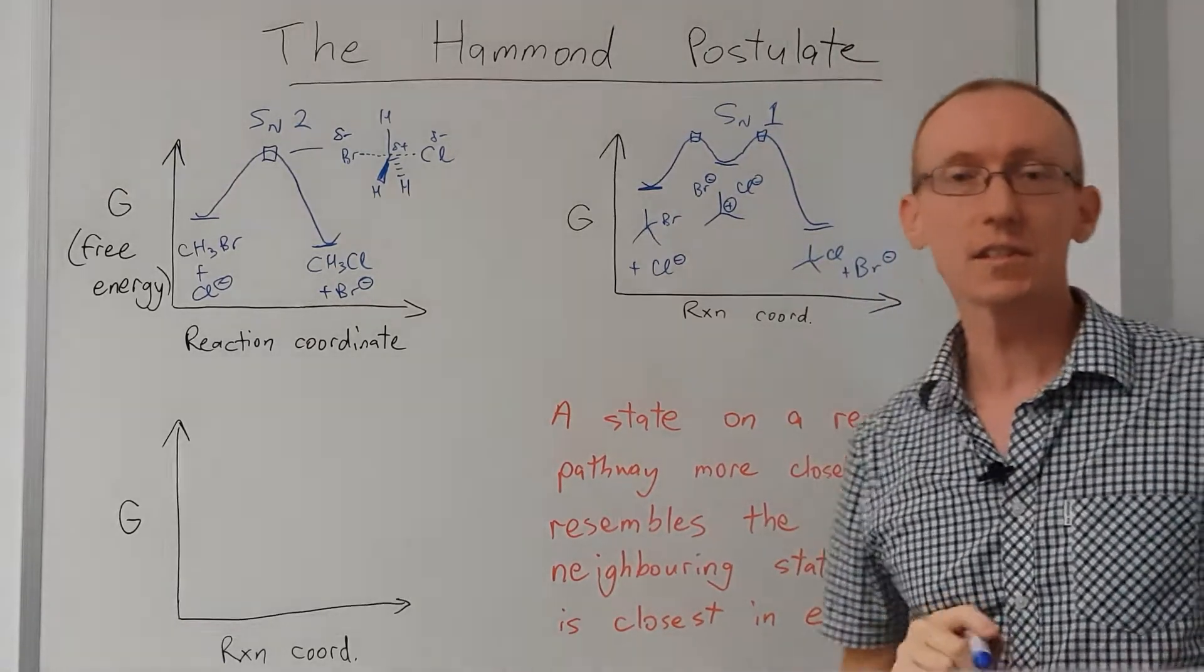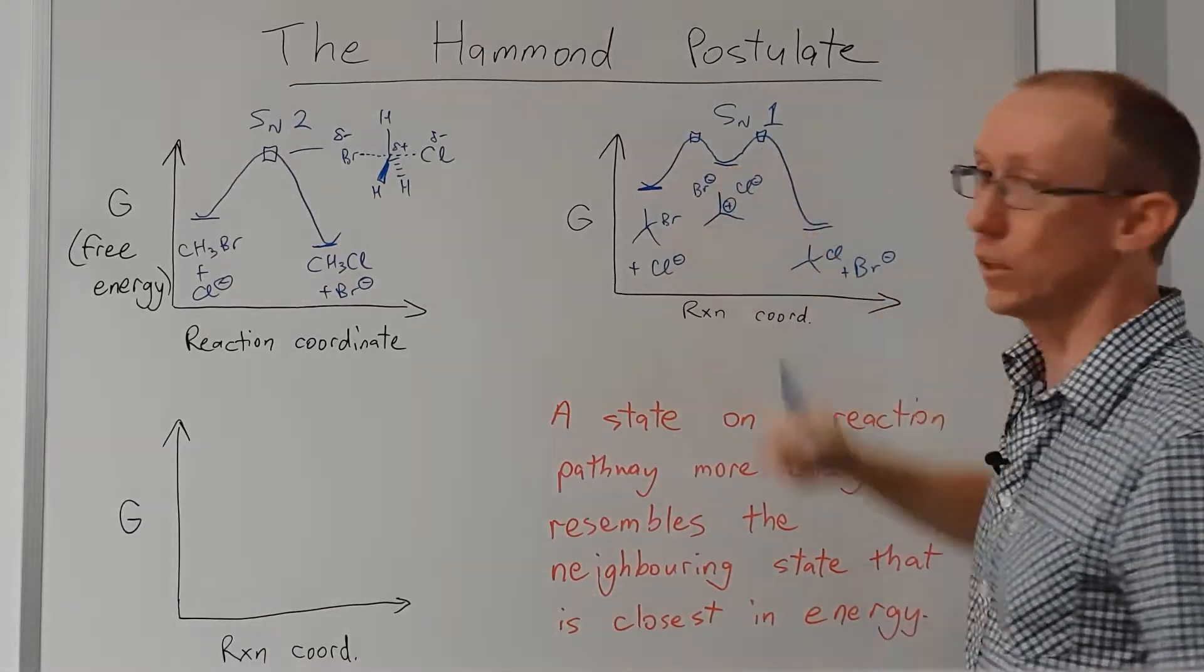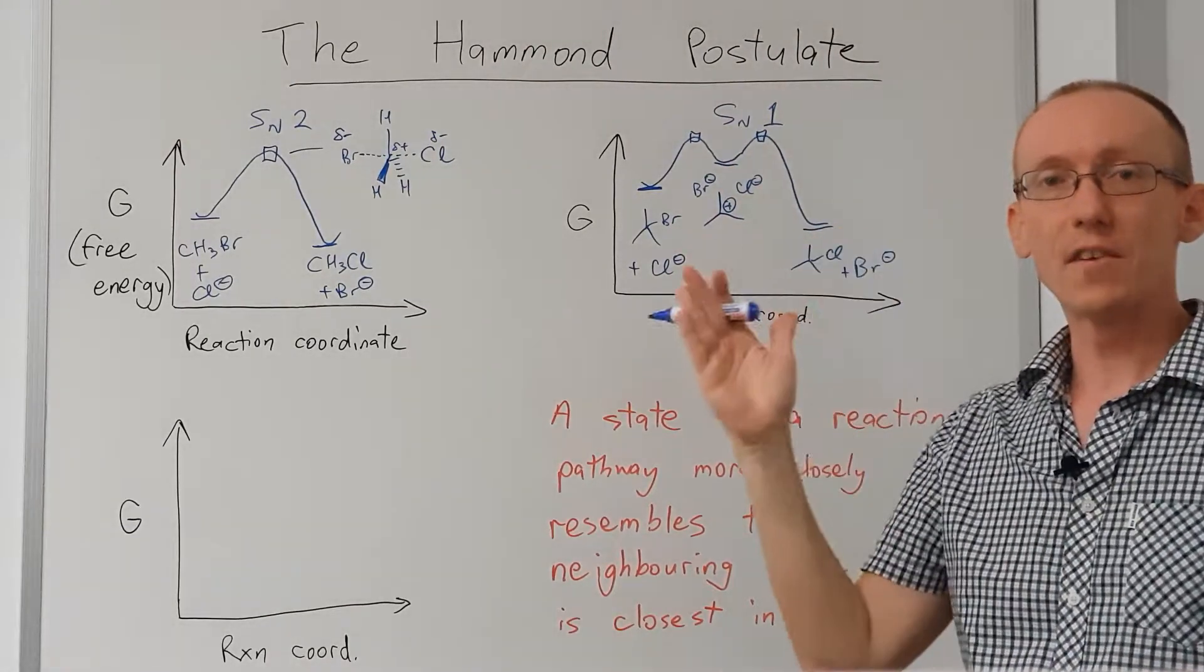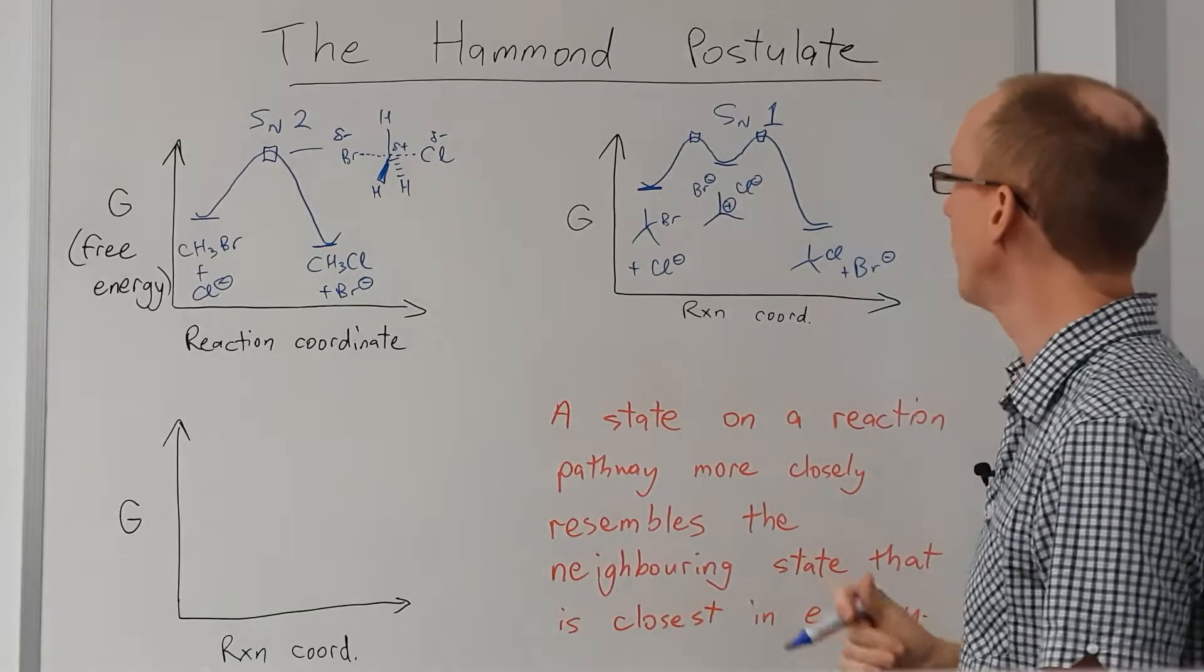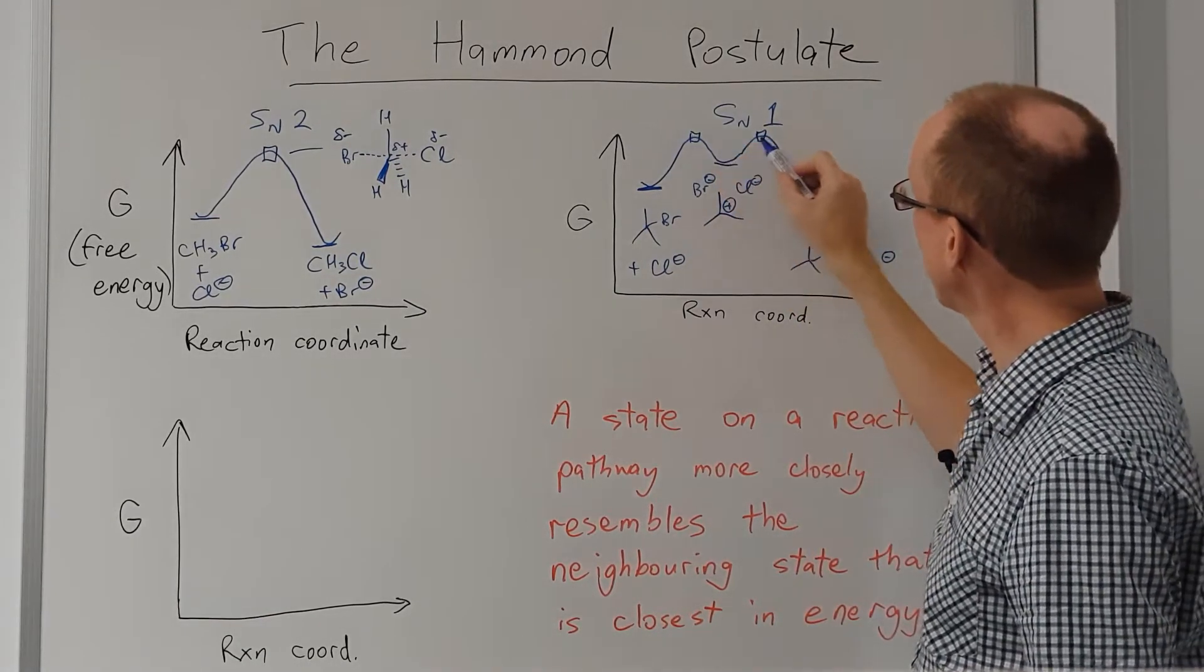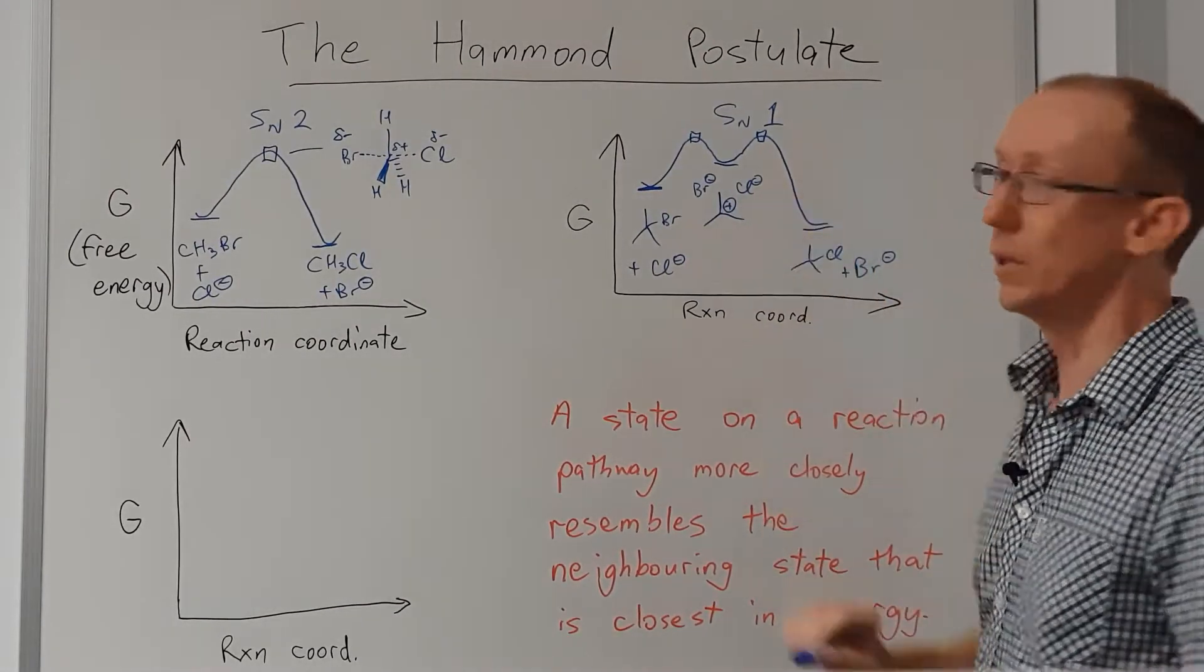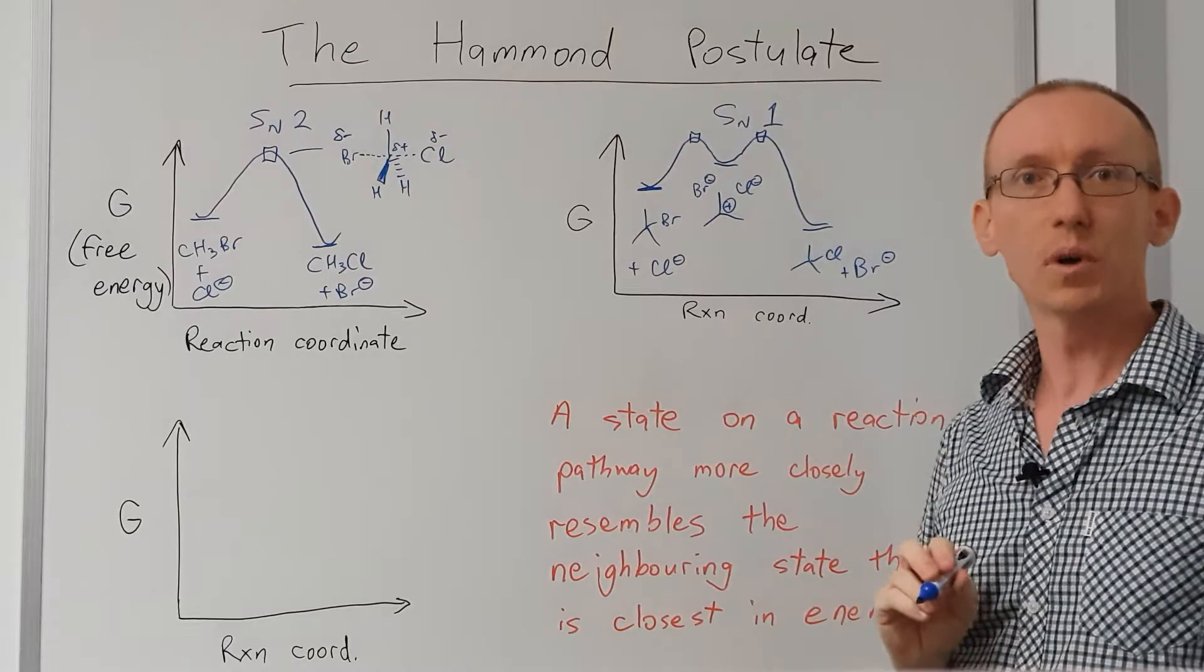Each of those transition state structures really looks like the thing that they're closest in energy to and that they're directly related to in terms of the reaction profile or the reaction pathway. This transition state here and this transition state here are both going to look very similar to the tert-butyl cation.